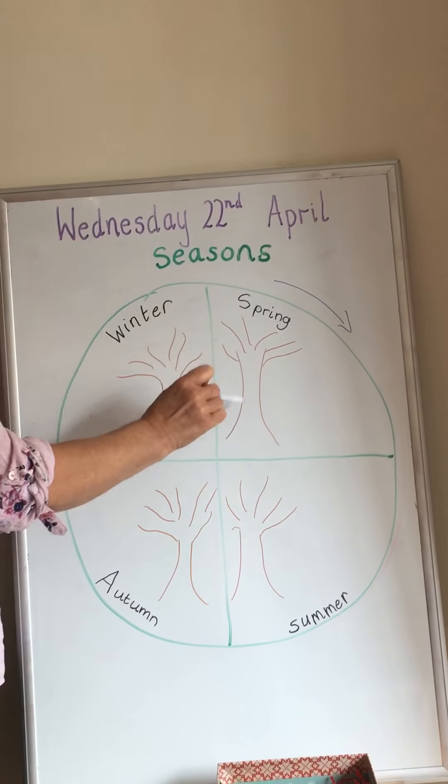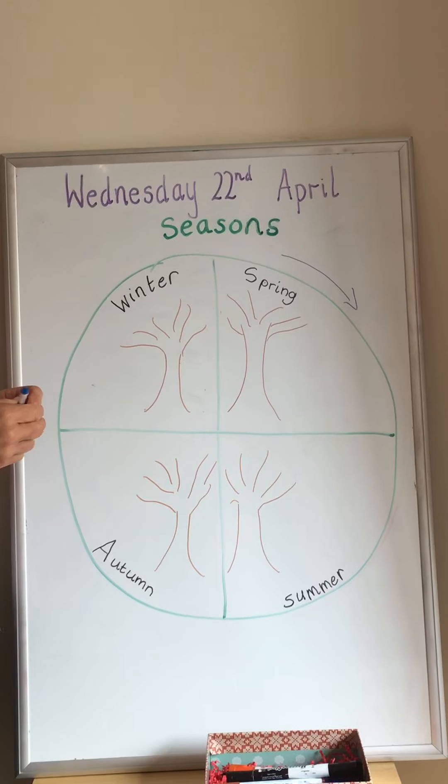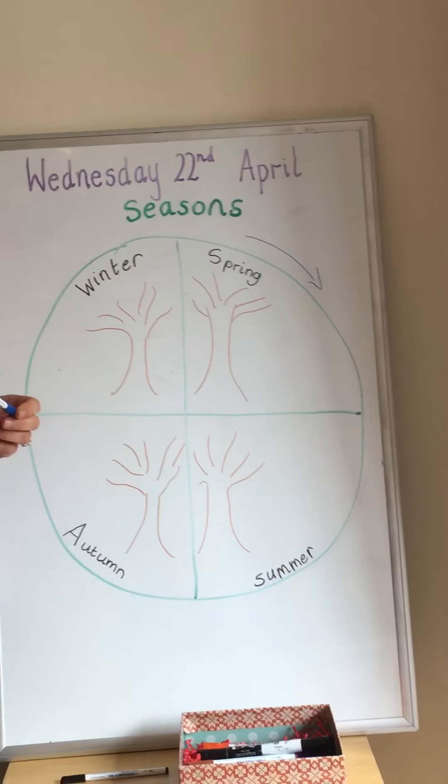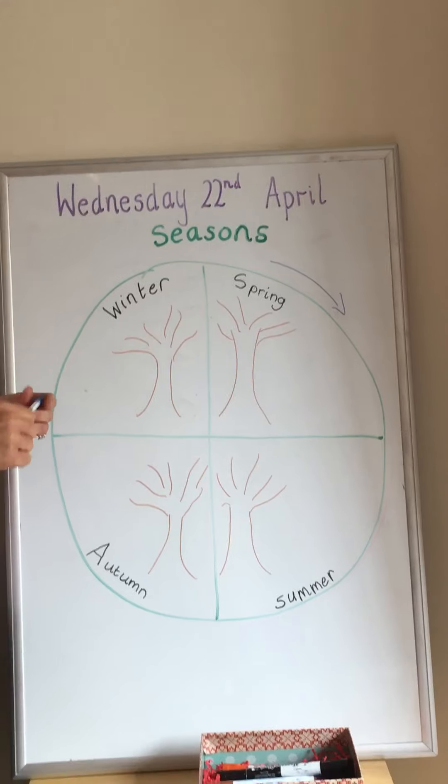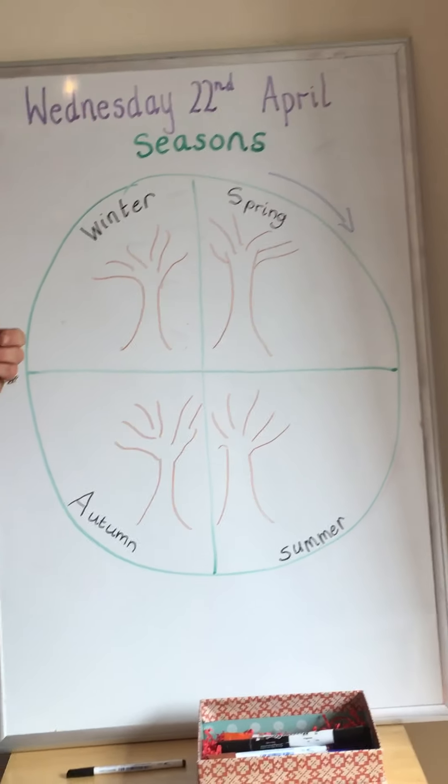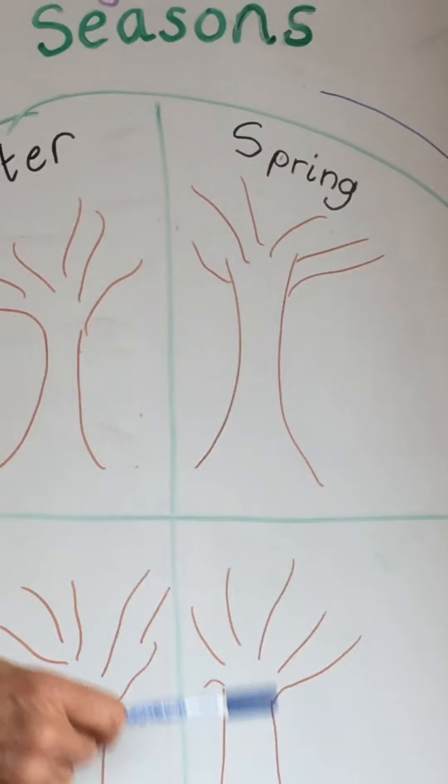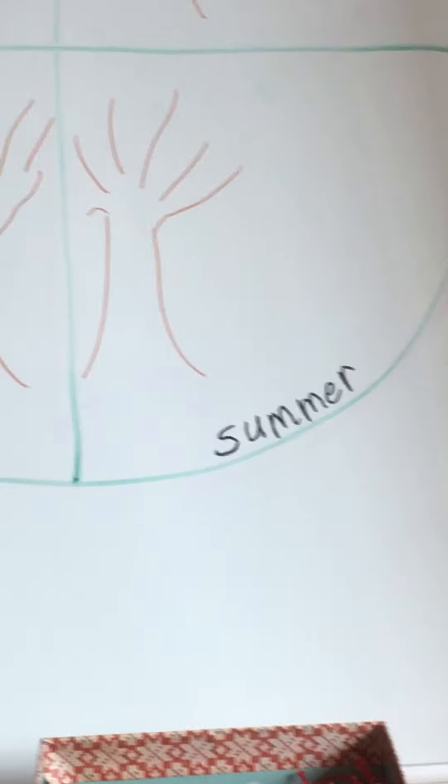You are going to draw four boring trees. The trees are just brown, they've got nothing on them at the moment. Your task is to put on the trees what you think they might have in the spring, in the summer, the autumn and the winter.